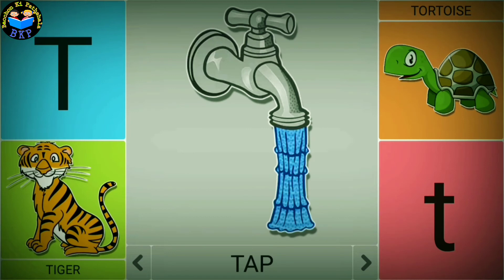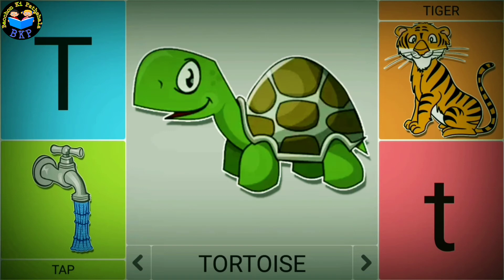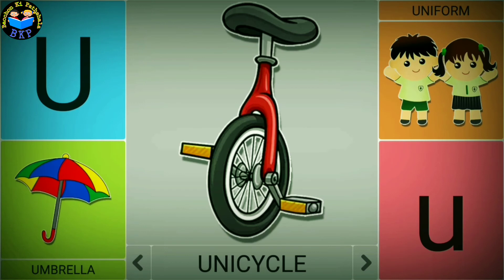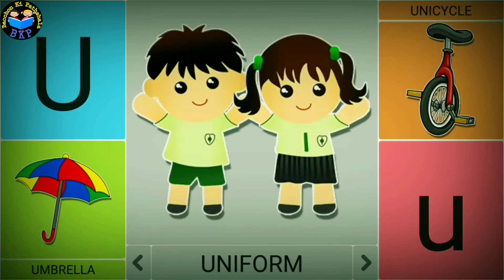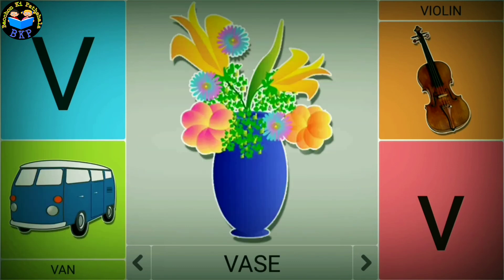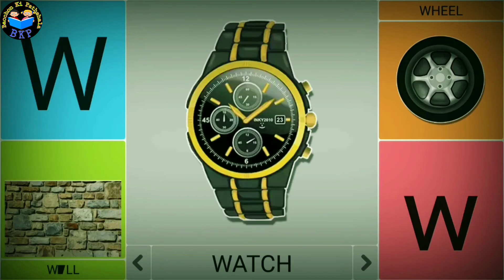T is for tap. T is for tiger. T is for tortoise. U is for umbrella. U is for unicycle. U is for uniform. V is for van. V is for vase. V is for violin. W is for watch.